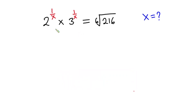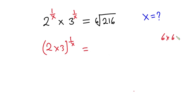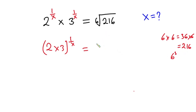I can write the left hand side as (2 times 3) to the power 1 over x. And this is equal to — now 6 times 6 is 36, and 36 times 6 is 216. So this means I can write 216 as 6 to the third power. So in place of 216, we have the sixth root of 6 to the third power.